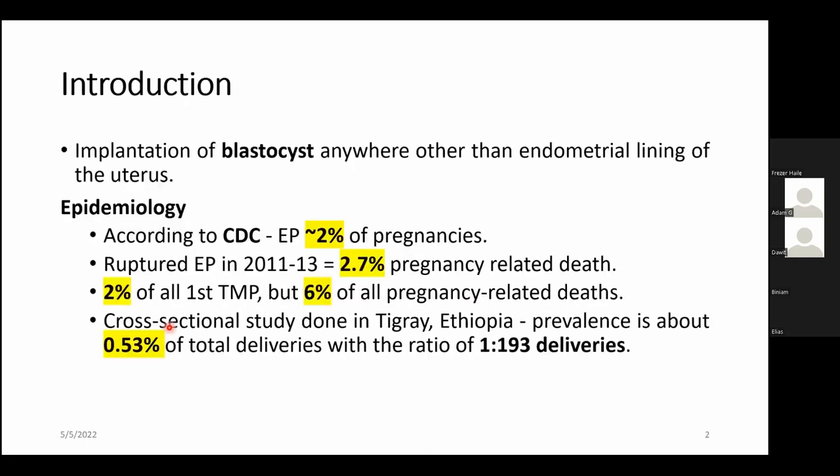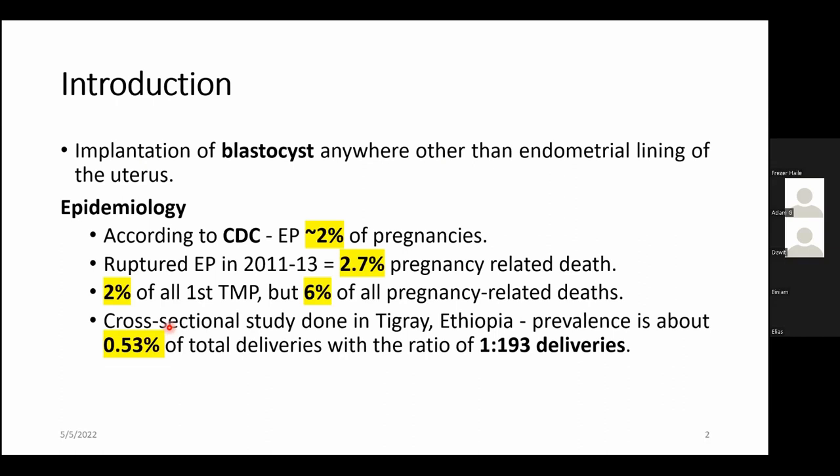To start with the introduction: once the egg meets with the sperm cell, it forms the fertilized ovum. This fertilized ovum undergoes successive divisions and reaches the level of blastocyst. Normally, it implants to the lining of the endometrium. But when there are problems of the fallopian tube, implantation could occur somewhere other than the endometrial lining — we call this ectopic pregnancy.